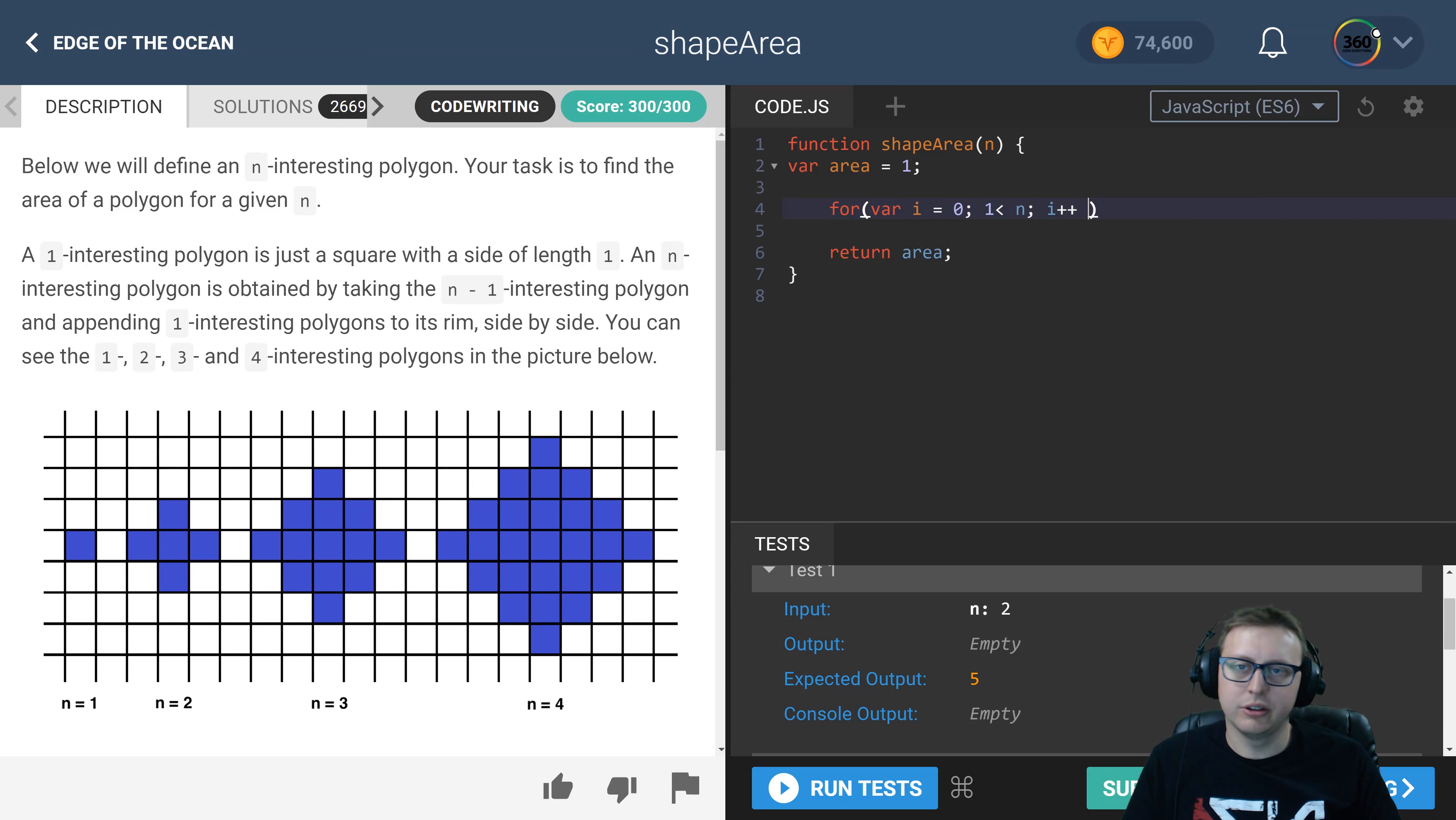Oops, excuse me, I meant to put this as one, and this is i. So here's our for loop. And what we want to do here is say area plus equals, because we want to add to it, four times i.